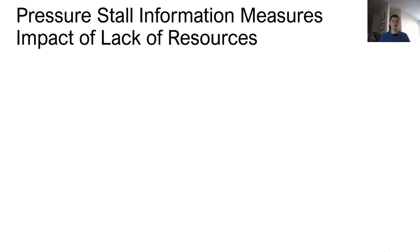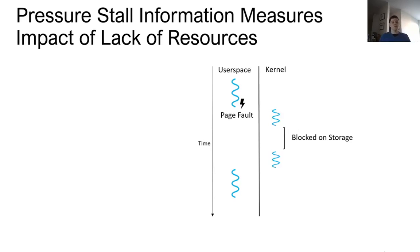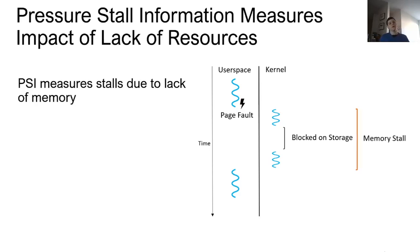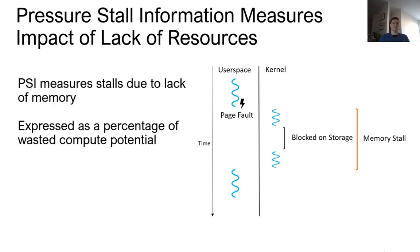PSI stands for Pressure Stall Information, and it measures the impact of lack of resources. Consider a page fault where a user space thread is executing, hits a page fault, goes into the kernel, then is blocked on storage loading in the faulted-in page, and finally kernel maps everything and user space resumes. PSI tracks this period where user space failed to execute as a memory stall. PSI expresses itself as a percentage of wasted compute potential — stall time as numerator over compute potential as denominator. So one thread stalling in a hundred-thread container is not as big a deal as if that were the only thread.